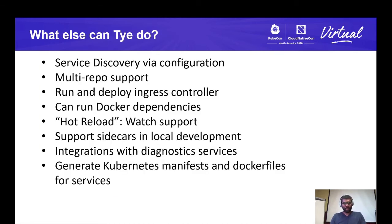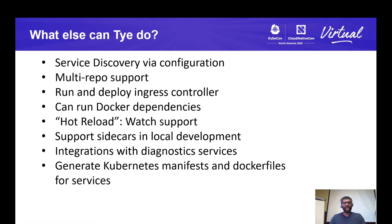We showed you a basic application with Tye — a frontend and backend — but we also have more features to help you develop microservices faster. You can discover peer services via configuration by injecting the right variables and reading them in your application. We also have support for developing across multiple repositories: if you have services A, B, and C in different repositories, you can run a command to clone them, pull them down, combine them into a single Tye manifest, and run those while still getting service discovery and other features.